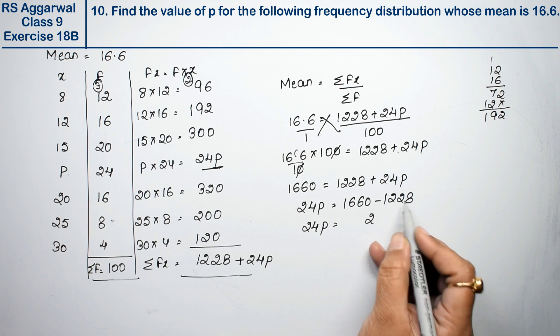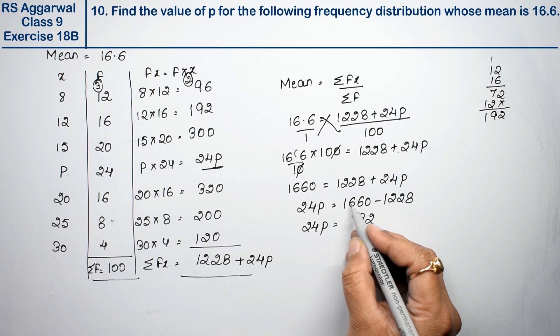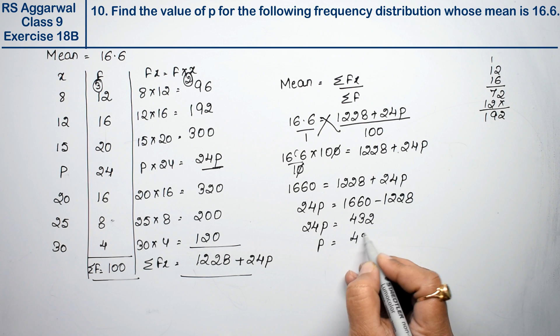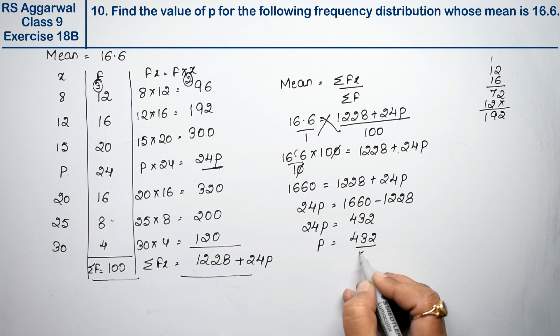Subtracting: 10 minus 8 is 2, 5 minus 2 is 3, 6 minus 2 is 4. So 24p equals 432, and p equals 432 divided by 24.